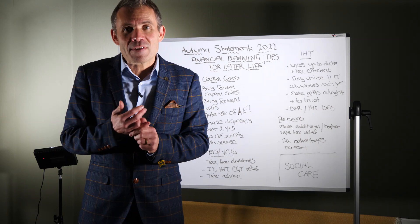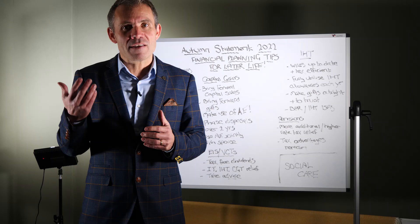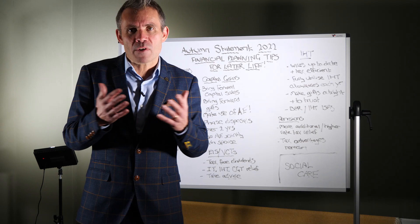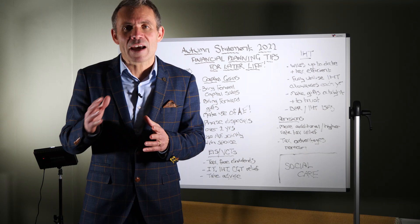The dividend allowance, the £2,000 of dividends that you can get tax-free, that's going to be reduced in April 23 down to £1,000 and then reduced again by another £500 down to just £500 in April 24. And the capital gains allowance, the amount of gain that you can have on a disposable asset, has reduced from £12,000 down to £6,000 in April 23, and then reduced again down to £3,000 in April 24. So not much good news.